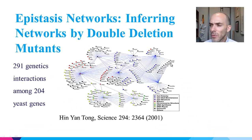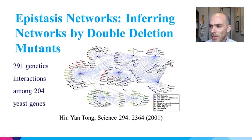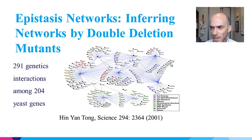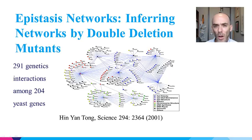So far we looked at direct physical molecular interactions — cell signaling, gene regulatory, and protein-protein interactions. However, there are other types of molecular biological networks that do not require direct physical interaction. Here is an example of an epistasis network from double deletions in yeast: if you knock down one gene, the yeast may grow fine, but if you knock out two genes, those two genes may cause the yeast to stop growing — and that is an epistasis interaction.